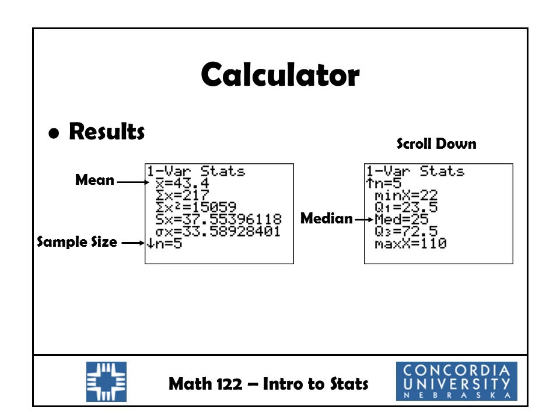There's a down arrow indicating more results. Scroll down and you'll see Min X equals 22, the smallest value. Q1 we'll cover in the next section. MED stands for median — it automatically calculated 25 for us. Q3 we'll discuss later, and Max X equals 110, our largest data value. That's all there is to calculating the mean and median — the calculator does it automatically.